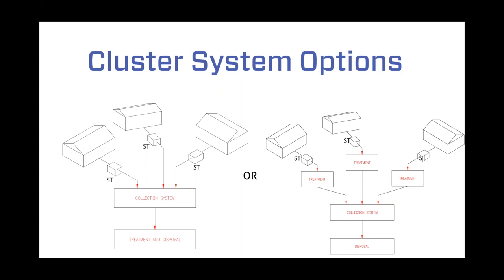On the right side, you'll see the same three houses with a septic tank for pretreatment, but on each lot we'll also do advanced treatment. So each home will have its own advanced treatment system to treat the effluent to a very high degree, and then this highly treated effluent will flow to a community collection system. We do the option on the left far more often, but either option is available and there are advantages and disadvantages to both.